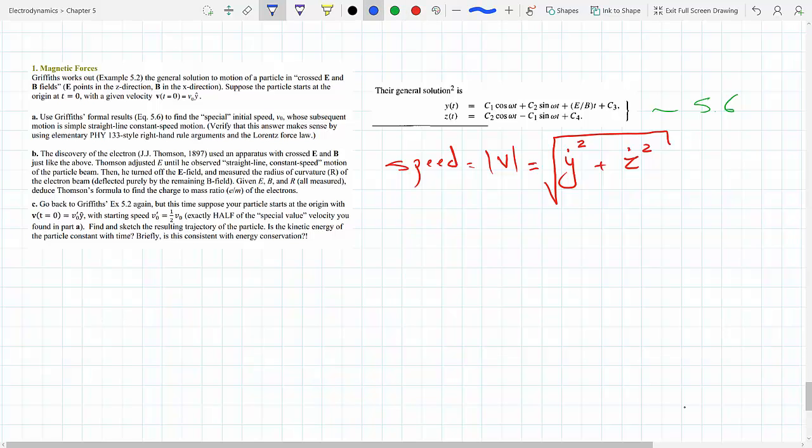And with this we can find what y dot is. So this is part a. Y dot is minus omega - just differentiate Y of t. The derivative of cosine is minus sine, derivative of sine is cosine.